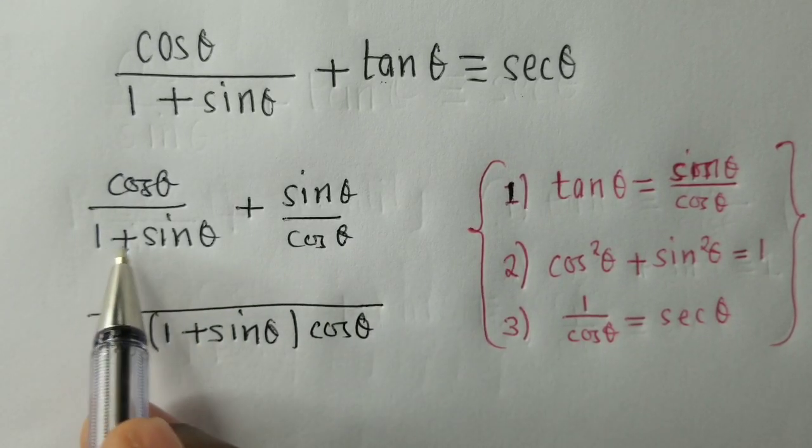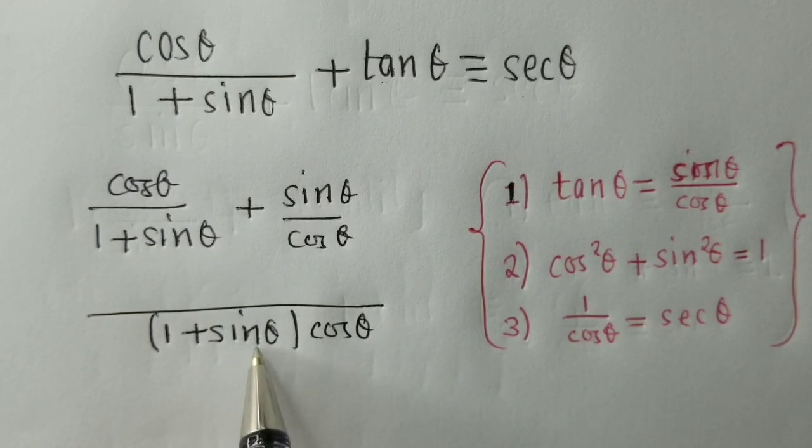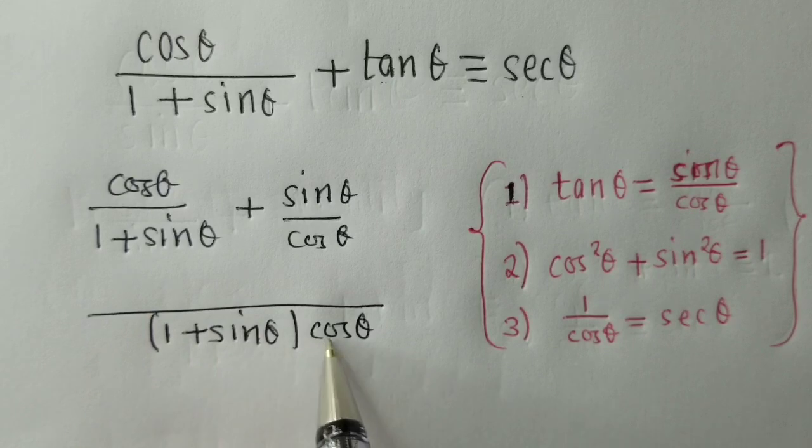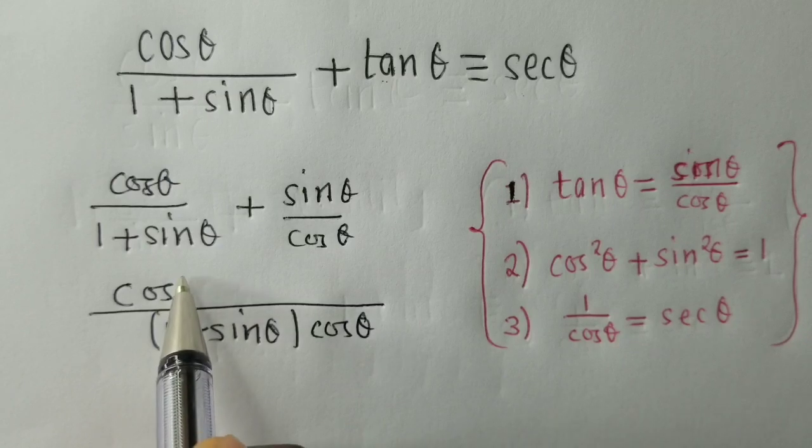When we say 1 plus sin theta into 1 plus sin theta cos theta, we shall have cos theta. Cos theta times cos theta, we shall have cos theta squared.